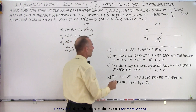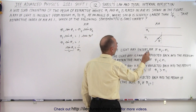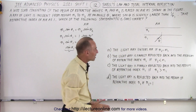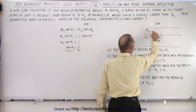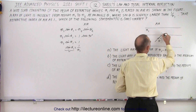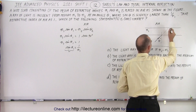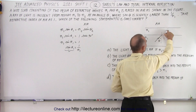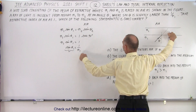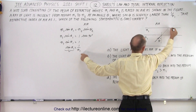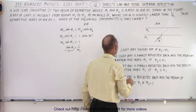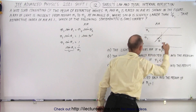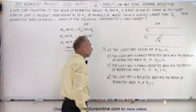Statement A says the light ray enters air if N1 equals N2. If the two refractive indices are the same, the light simply goes in the same direction — there's no bending — and then it's incident on air where the TIR condition is met. So the light ray does not enter air; it undergoes total internal reflection. Statement A is not correct.